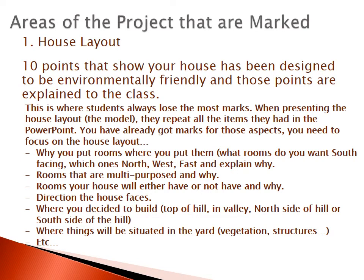The bullet points give you an idea of what I mean by location and house layout: why you put rooms where you put them, what rooms you want on the south side versus north, west, or east — and explain why. Consider multi-purposed rooms and why, because using fewer materials is important. Think about which rooms your house will have or not have and why — some rooms require materials to build but in the long term help you save energy. Consider the direction the house faces, where you decide to build — top of the hill, in the valley, north or south side — where vegetation and structures are situated in the yard, where your garden, greenhouse, or tool shed goes, and where you plant trees. If you plant a row of deciduous trees along one side, and can explain why planting them there is environmentally good and helps save energy, then it's worth marks.